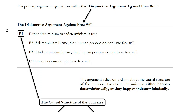The idea is that there are these two things that could be true — determinism or indeterminism — and both of them lead to human beings not having free will, so therefore we don't have free will. There's much more to explain here, specifically the terms determinism and indeterminism, which the argument largely hangs on.